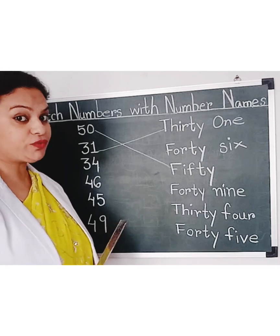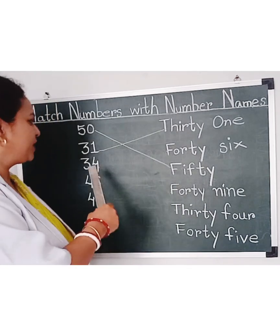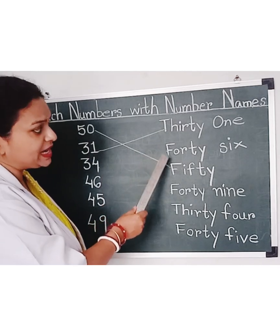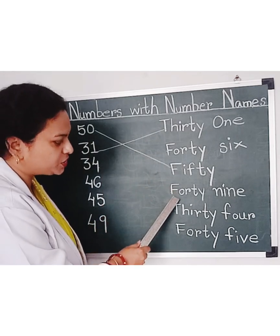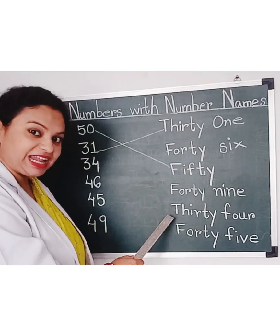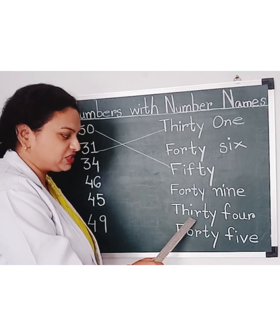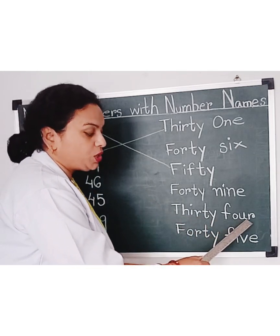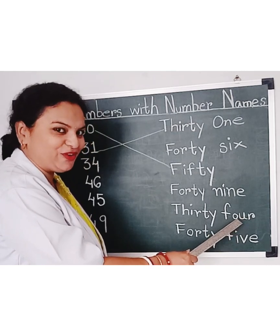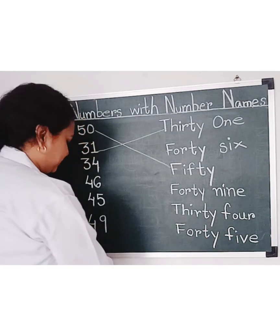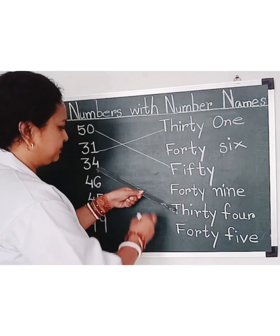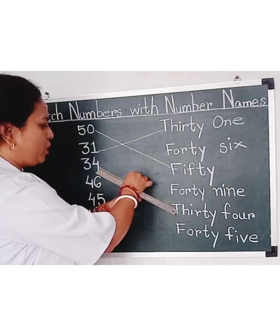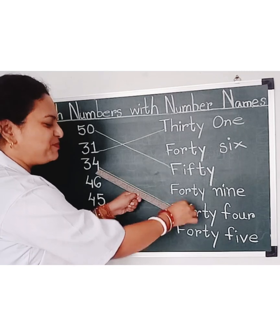Now, let's see which one is the next number. 34. Let's find out. Yes, here it is — T, H, I, R, T, Y — Thirty; F, O, U, R — Four. Thirty-Four, 34. Let's match it. We will match the numeral 34 with its number name.